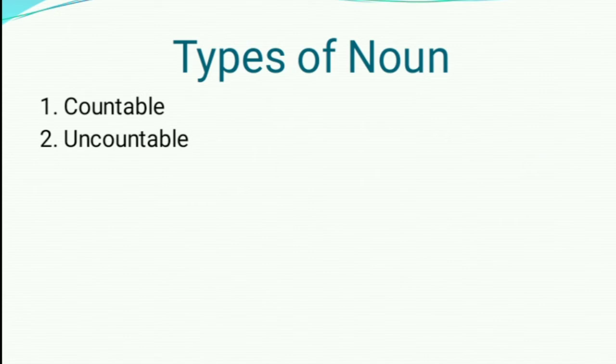Now we shall try to know how many types of nouns are there. Two types: countable and uncountable.